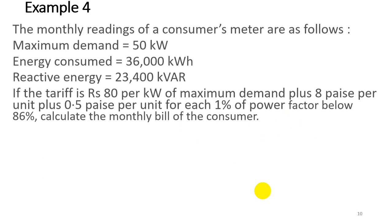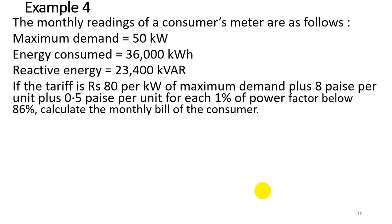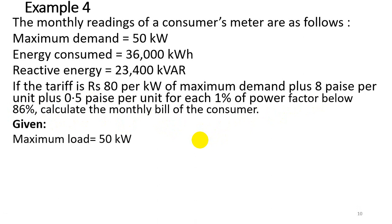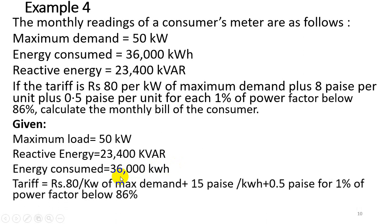The next problem involves a monthly meter reading. Maximum demand is 50 kW, energy consumed is 36,000 kWh, and reactive energy is 23,400 kVAr. The tariff is rupees 80 per kilowatt of maximum demand plus 8 pies per unit, plus 0.5 pies per unit for each 1% of power factor below 86%. We need to calculate the monthly bill.